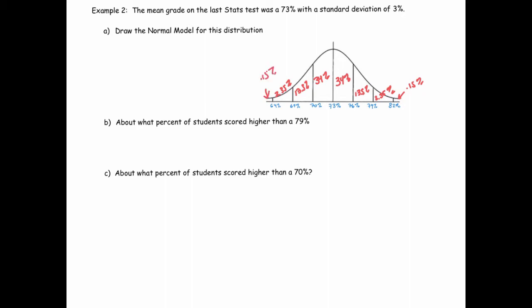About what percent of students scored higher than 79%? Well, we can find that data value, we can just find 79%. It's one of those key values. And above that is 2.5%.